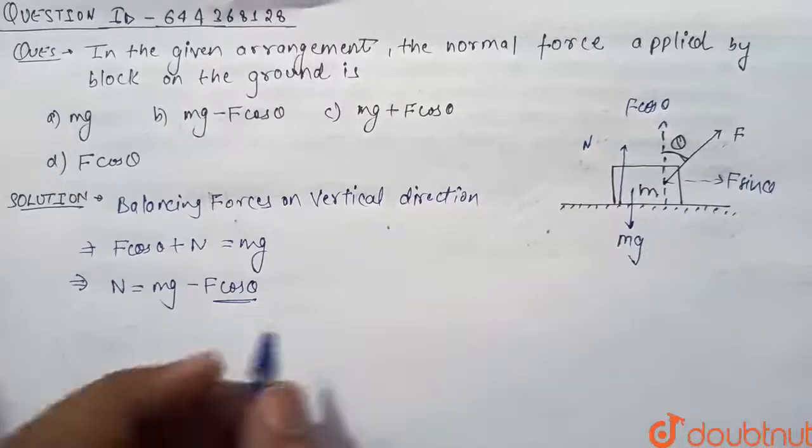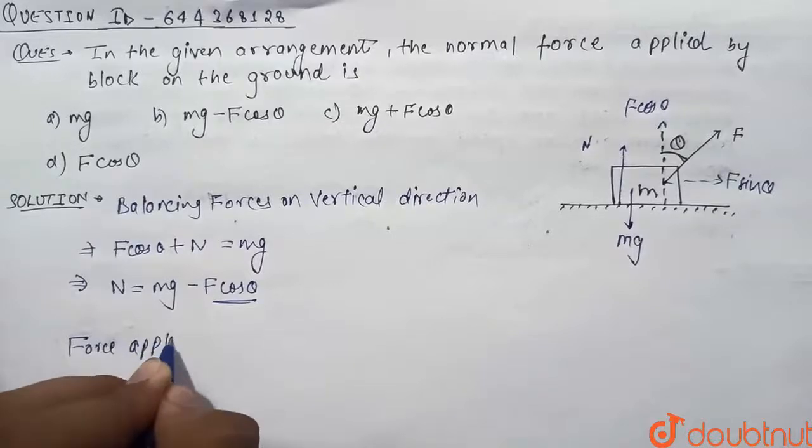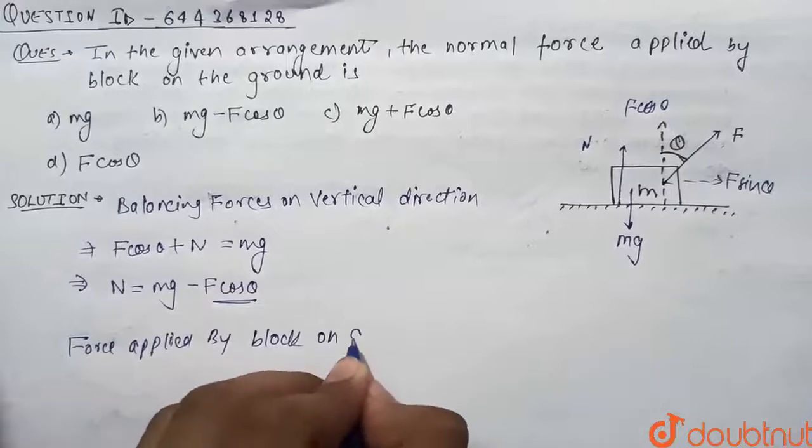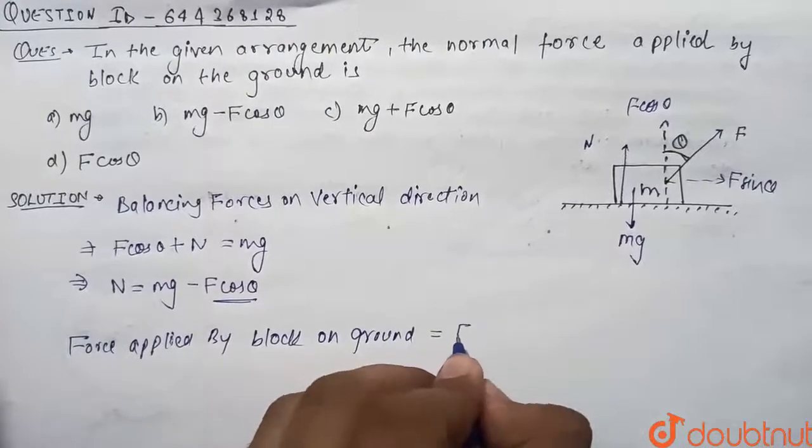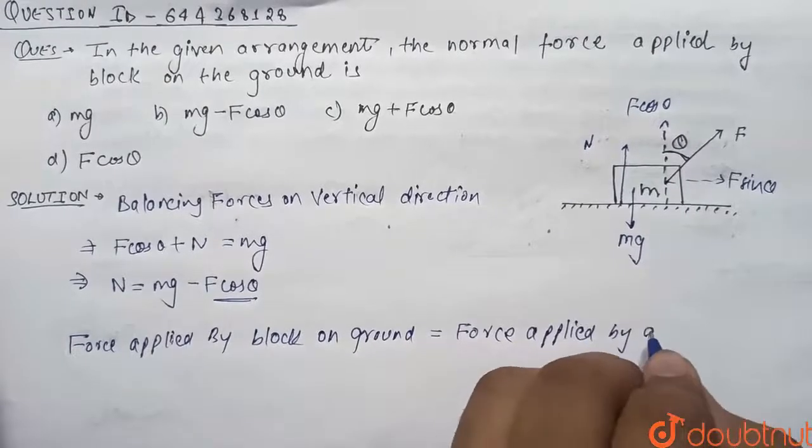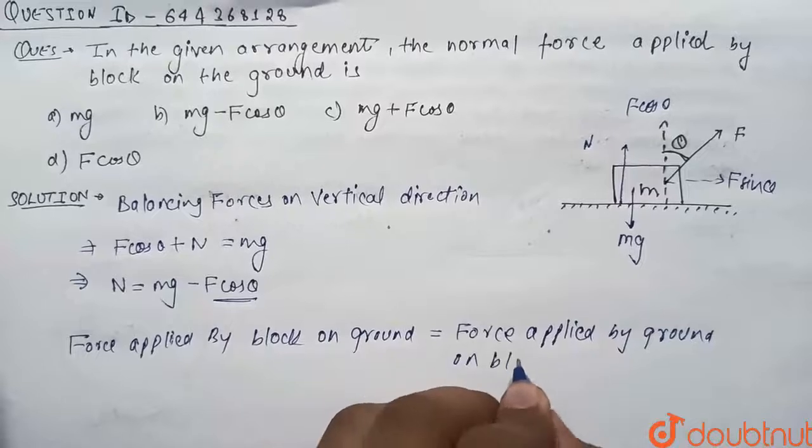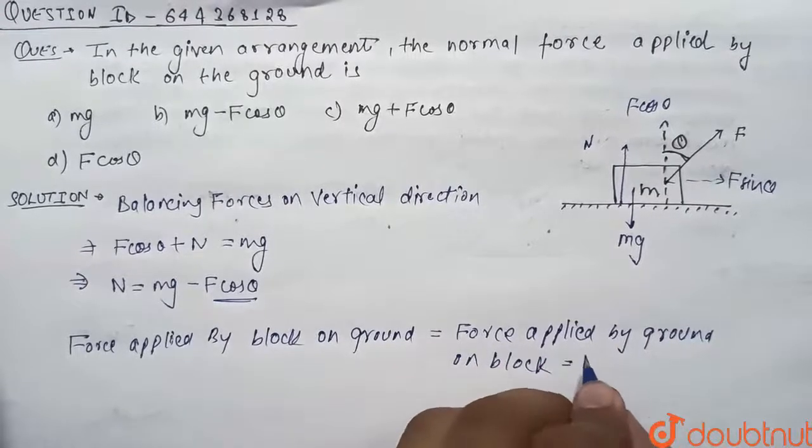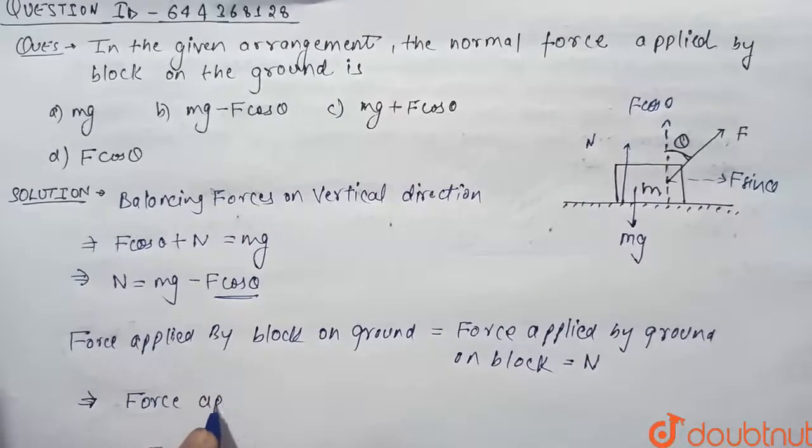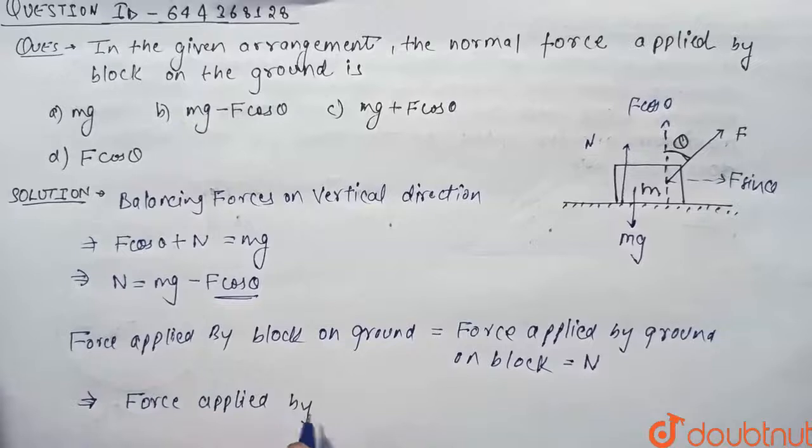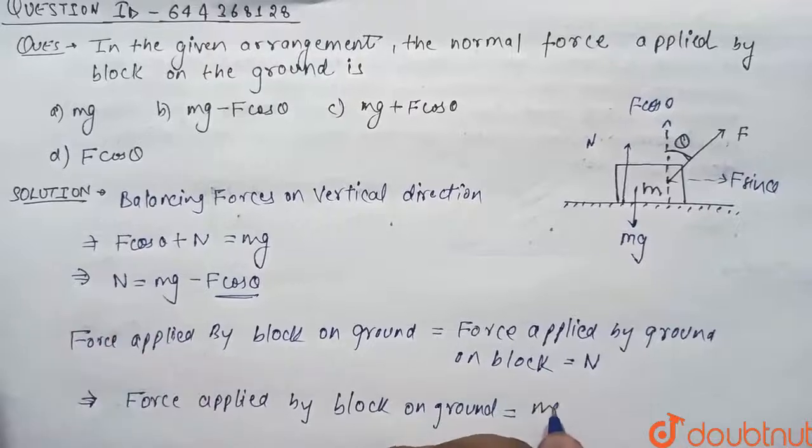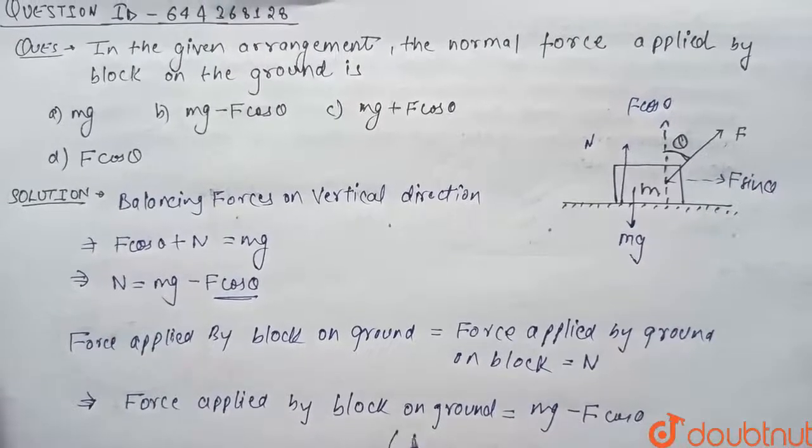So the force applied by block on ground will be equal to force applied by ground on block, and this force is normal. So from here we can say that force applied by block on ground will be equal to normal, that is mg minus F cos theta.